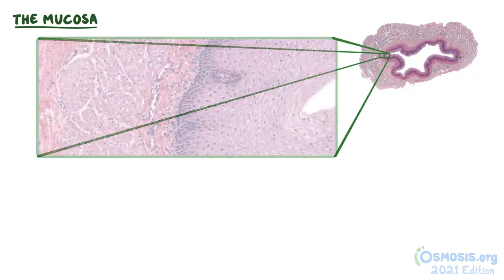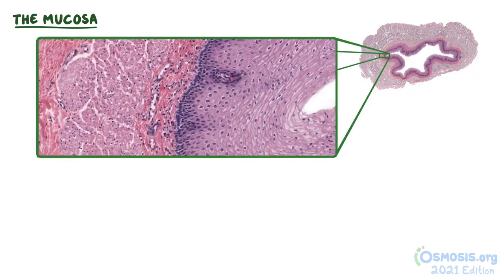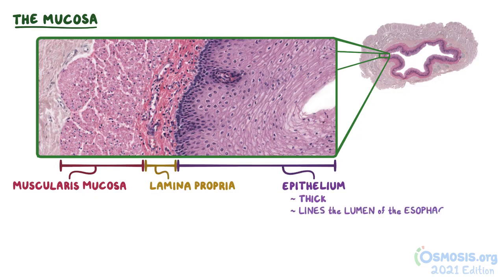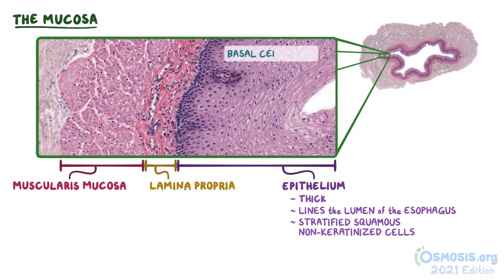The mucosa of the esophagus consists of three main layers. At 20 times magnification, we can see each of the layers more clearly: the epithelium, lamina propria, and muscularis mucosa. The thick epithelial layer lines the lumen of the esophagus and consists of stratified squamous non-keratinized cells, which have the typical appearance of flat, overlapping cells that are more flat as they move away from the base or basal cell layer.